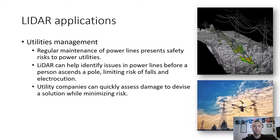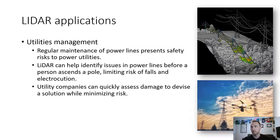Utilities management: regular maintenance of power lines presents safety risks. Speaking from personal experience working for a power utility company, vast amounts of time and effort go into mitigating risk to the company and customers. LiDAR can help identify issues in power lines before a person ascends a pole, limiting the risk of falls and electrocution. Instead of sending a technician up a dangerous 80-foot pole or 100-foot tower, they can send a UAV with LiDAR, which can create a highly detailed model of the structure, the lines, and the landscape around it, so utility companies can quickly assess damage and devise a solution while minimizing risk.